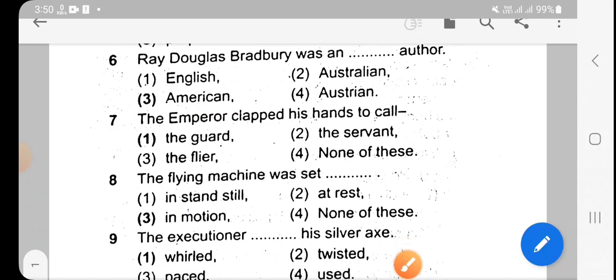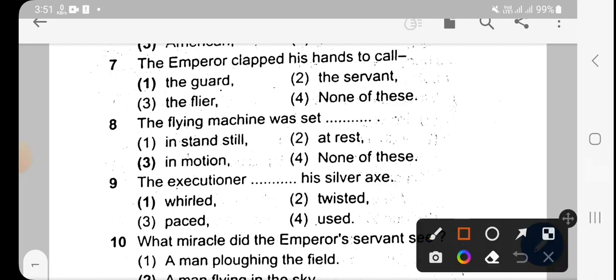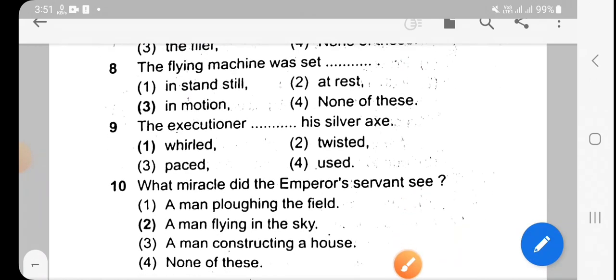The Emperor clapped his hands to call. Options are: the guard, the servant, the flier, or none of these. The answer is option 1, the guard. Next question: In the flying machine, what was set? Options are: in a stand still, at rest, in motion, or none of these.